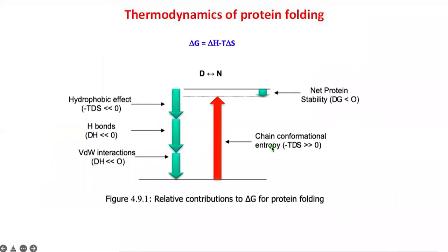To summarize: net protein stability is actually very weak, about 5 to 10 kcal/mol, and is negative for spontaneous folding. The forces involved in this net negative value include the hydrophobic effect, hydrogen bonds, and Van der Waals interactions, which are all favorable. There is also chain conformational entropy, which is unfavorable — the disordered protein chain in multiple conformations has to fold into a single state, causing a decrease in entropy that opposes the process. However, between these two opposing forces, you end up with a delta G which is negative, causing the spontaneous folding of a protein into its folded state.